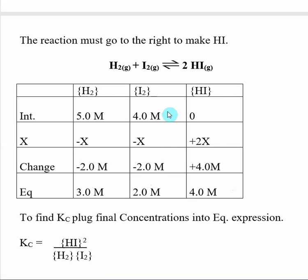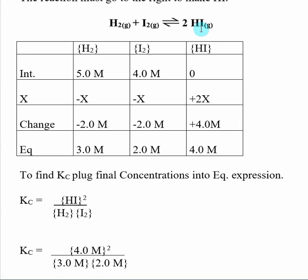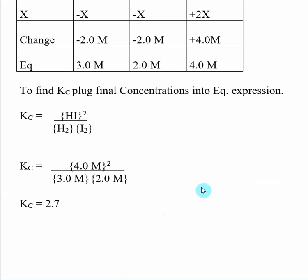The reaction is making 2X of HI. Since X is 2.0 molar, 2X is 4.0 molar, so my equilibrium concentration of HI is 4.0 molar. I2 went from 4 molar to 2 molar, losing 2 molar; H2 must also lose 2 molar to become 3.0 molar, and HI gains 4.0 molar for a final concentration of 4.0 molar. Now I have all equilibrium concentrations and can plug them into the equilibrium expression — products over reactants raised to their stoichiometric coefficients — giving a Kc value of 2.7. Remember, K values are unitless.